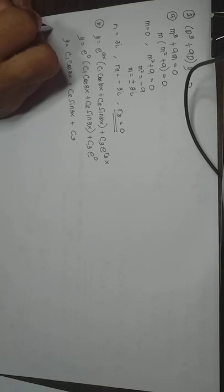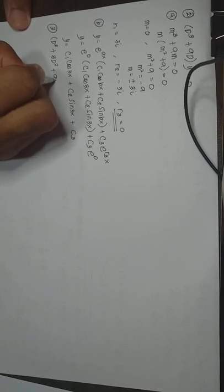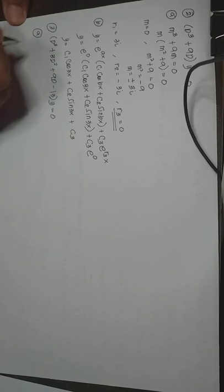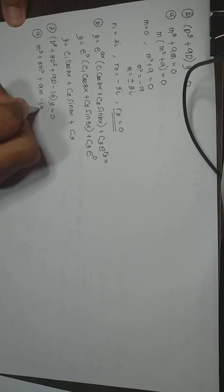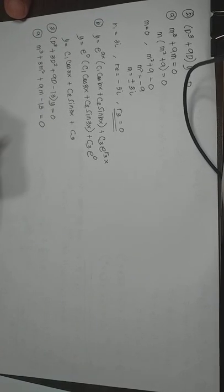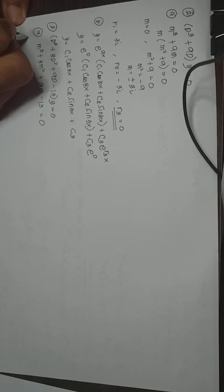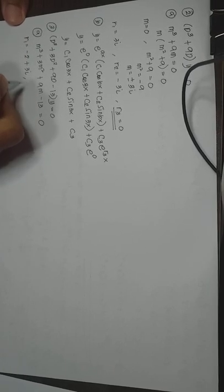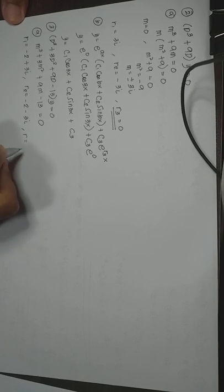Now let us have example number 3. Determine the solution of D cubed plus 3D squared plus 9D minus 13Y equal to 0. The auxiliary equation is M cubed plus 3M squared plus 9M minus 13 equal to 0. The roots are R sub 1 equal to negative 2 plus 3i, R sub 2 equal to negative 2 minus 3i, and R sub 3 equal to 3.